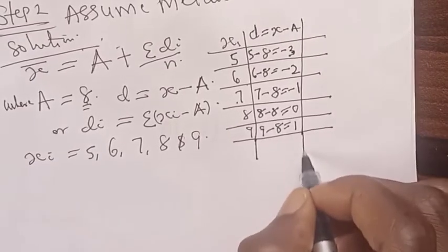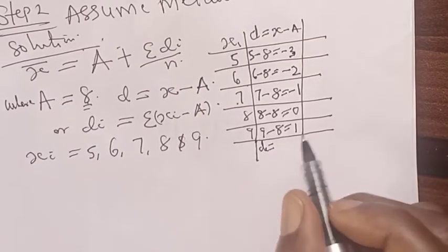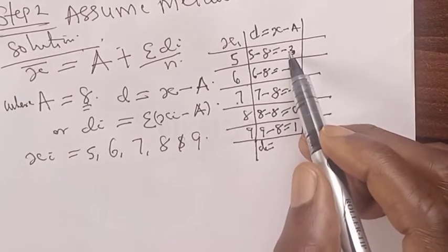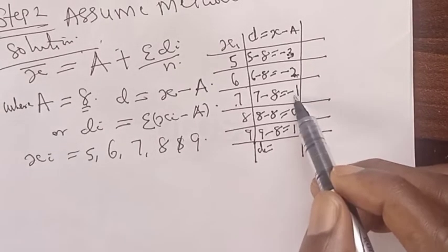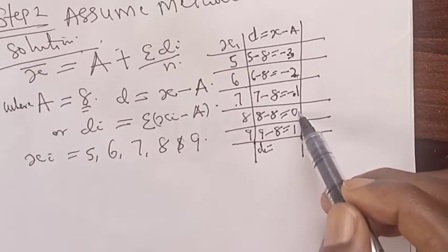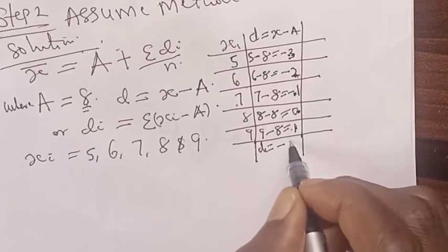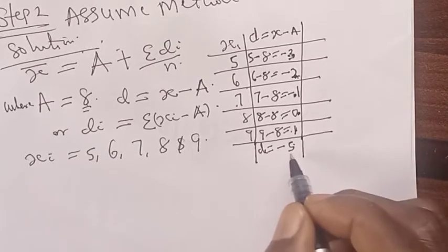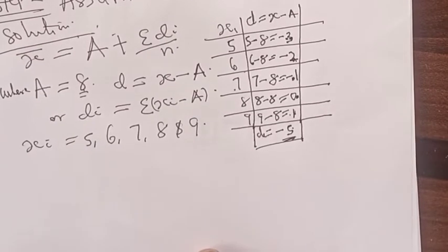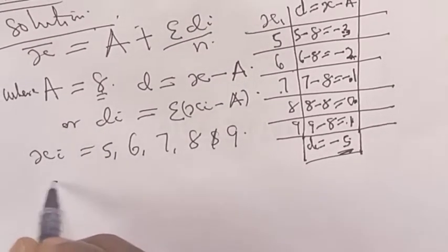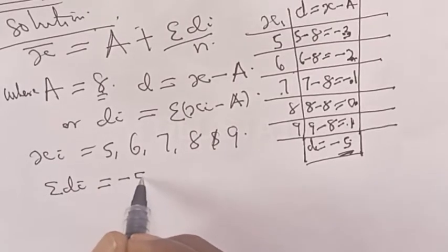Now, let's sum it together. Summation di will be equal to minus 3 minus 2 is equal to minus 5, plus minus 1 is minus 6, plus 0 is minus 6, plus 1 is minus 5. Therefore, summation of di is equal to minus 5.